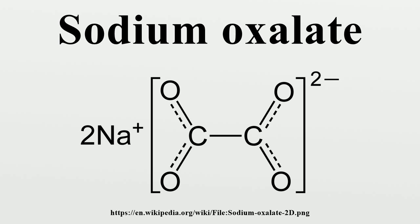Sodium oxalate is used to standardize potassium permanganate solutions. It is desirable that the temperature of the titration mixture is greater than 60 degrees Celsius to ensure that all the permanganate added reacts quickly. The kinetics of the reaction is complex, and the manganese ions formed catalyze the further reaction between permanganate and oxalic acid. The final equation is: 5 Na2C2O4 + 2 KMnO4 + 8 H2SO4 → K2SO4 + 5 Na2SO4 + 2 MnSO4 + 10 CO2 + 8 H2O.